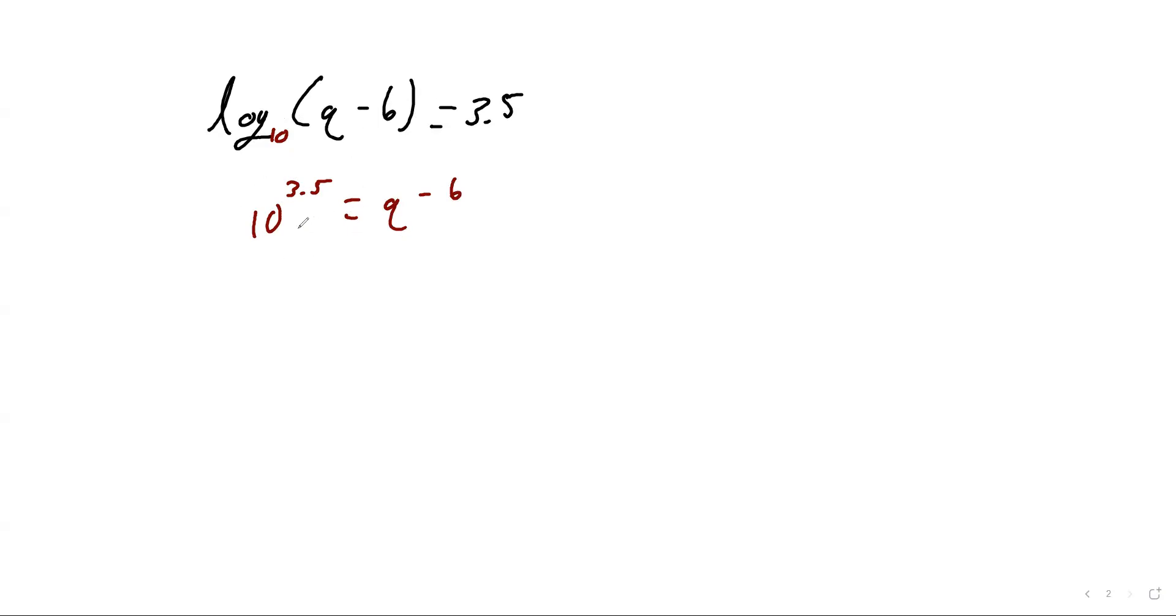I actually don't know what 10 to the 3.5 is, so you would just type that into the calculator. So then I would just add 6 to that result. So on a test, if you gave me this as your answer, I'd probably accept it, since we don't know what that is by heart. But you'd always type this in the calculator, get a decimal. According to the book, this is approximately 3,168.28. But again, I'd accept this as well.